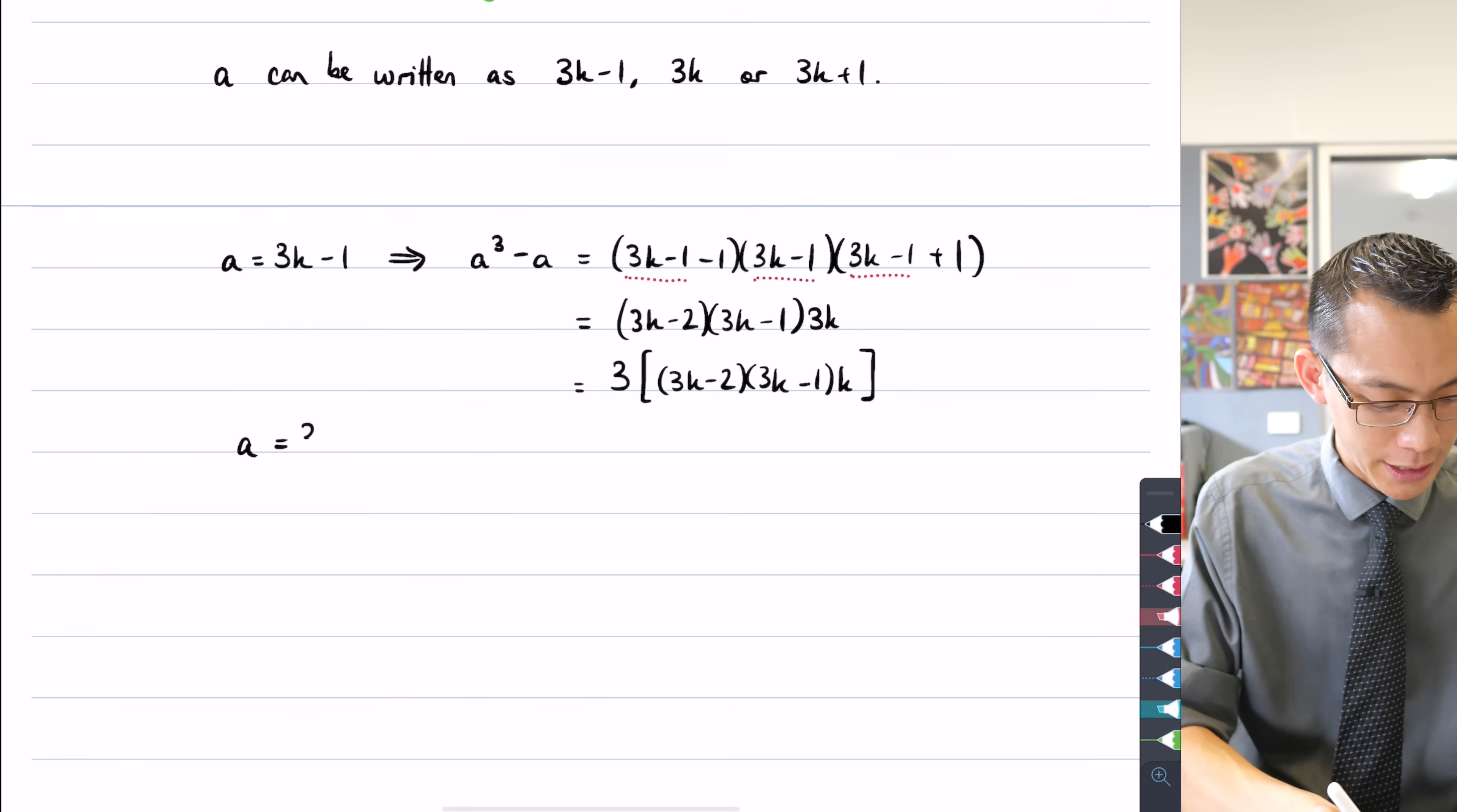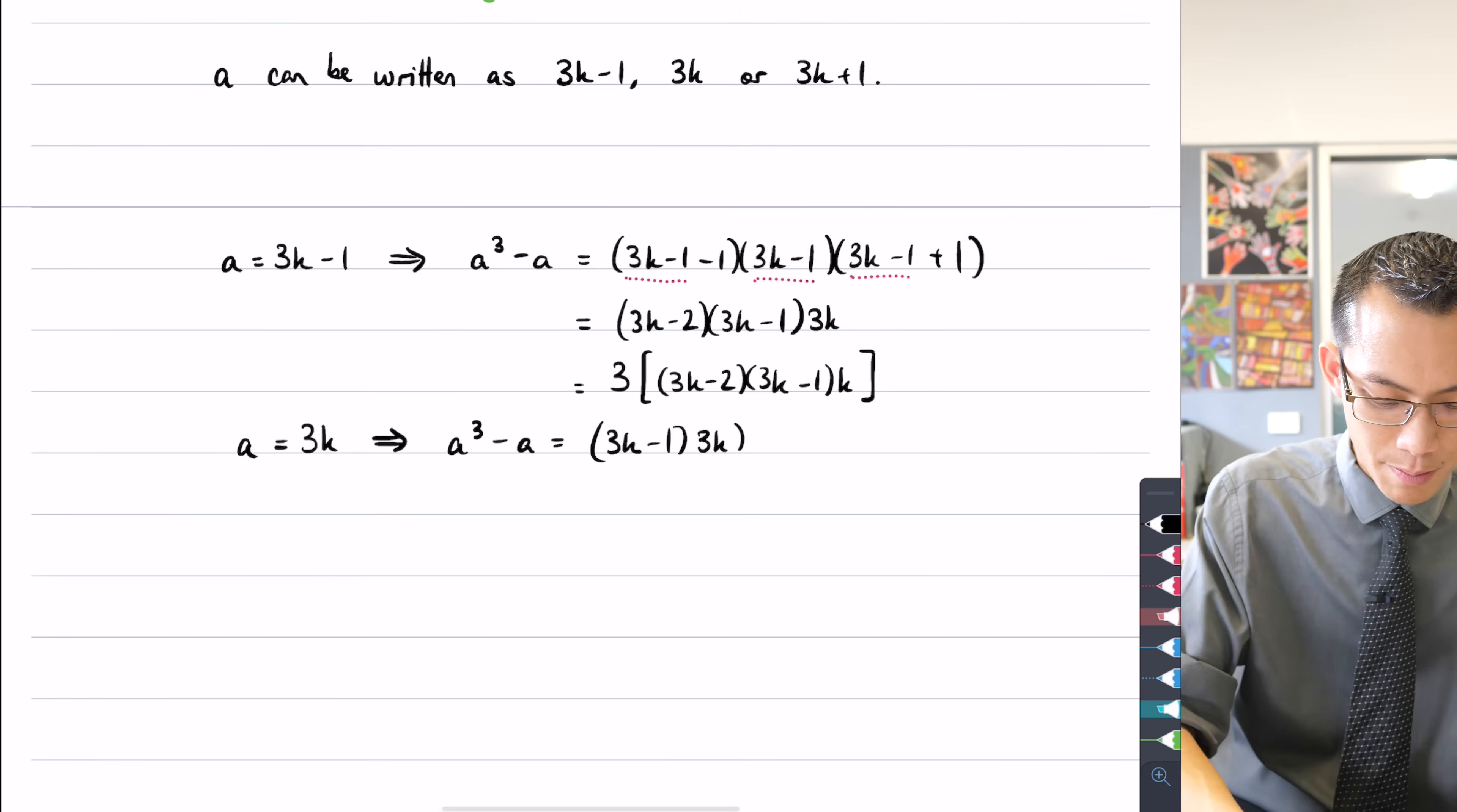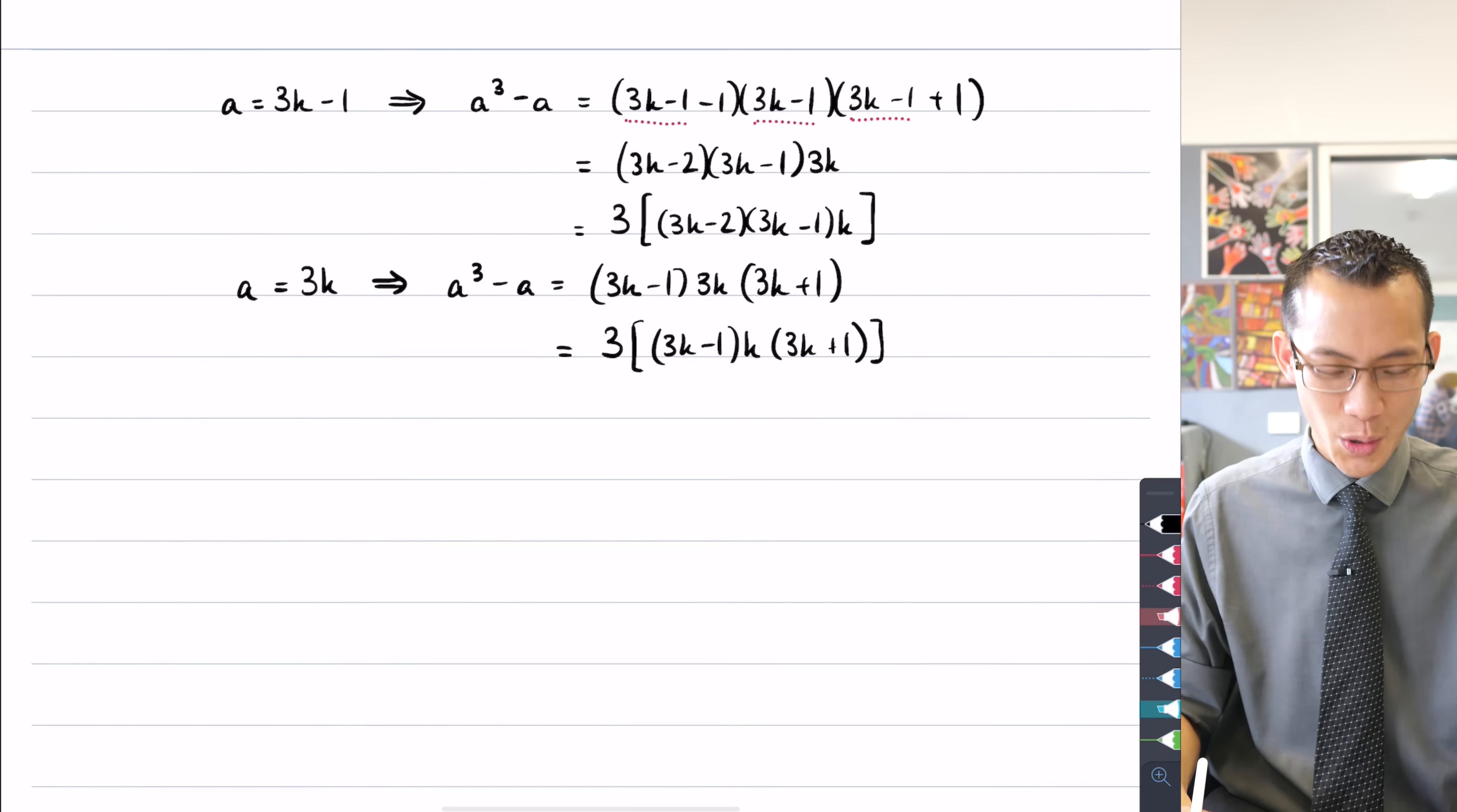Now I need to rinse and repeat and just do it for the other cases. So if alternatively, a was not 3k - 1, it might be one of the 3k's. This one's even easier. I can just say a³ - a must therefore be (3k-1)(3k)(3k+1). I don't even need to do any tidying up here. I just need to pull out the relevant factor of three and then write everything else afterwards. So that leaves me with a k and then 3k plus one.